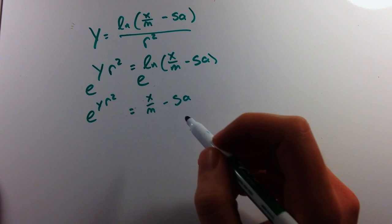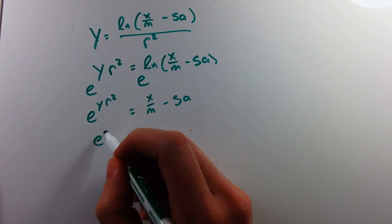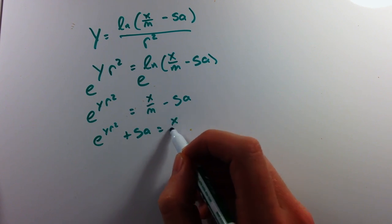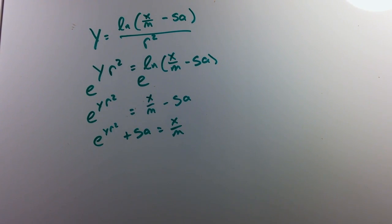Then here we can add s a to both sides, and we're left with e to the y r squared plus s a equals x over m.